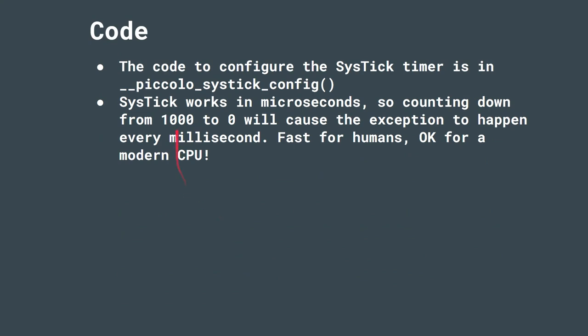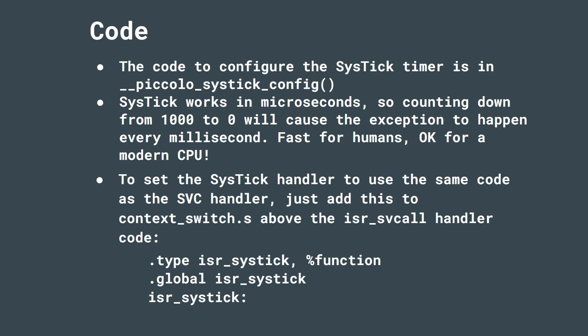The code to configure the SysTick timer is in piccolo_systick_config. You load up a register, enable it, and say you want the exception to be raised. You need to look at the Cortex-M0 datasheet and ARM's documentation to understand the individual bits to set. SysTick works in microseconds, so counting down from 1000 to zero causes the exception every millisecond — fast for humans, but fine for a 133 MHz CPU. To set the SysTick handler to use the same code as the SVC handler, you go into context_switch.s — the assembly code for the Cortex-M0 — and add another function called the interrupt handler for SysTick. Define it as a global function, put the label in there, and now ISR_SVC and ISR_SysTick run the same function.